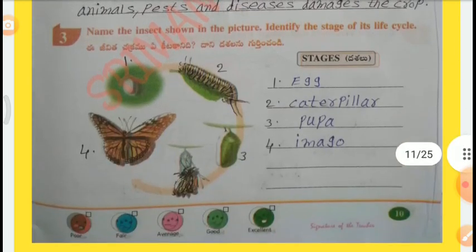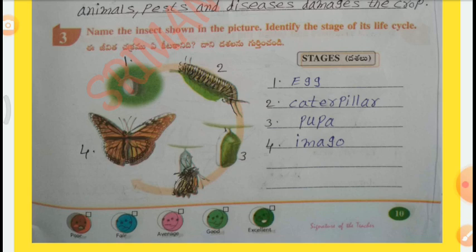Question 3: Name the insect shown in the picture and identify the stages of its life cycle. It is a butterfly. Stages: 1st — Egg, 2nd — Caterpillar, 3rd — Pupa, 4th — Imago (adult).